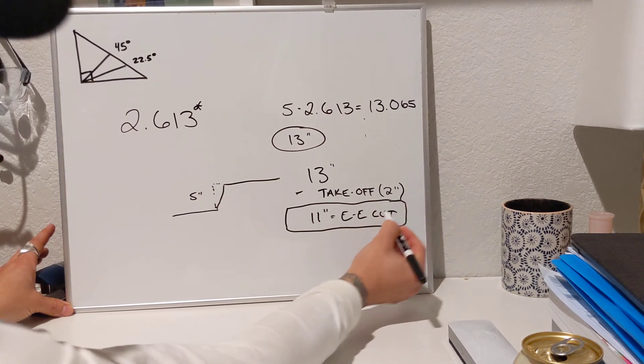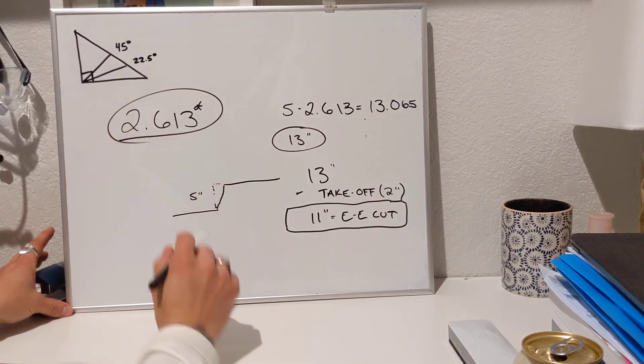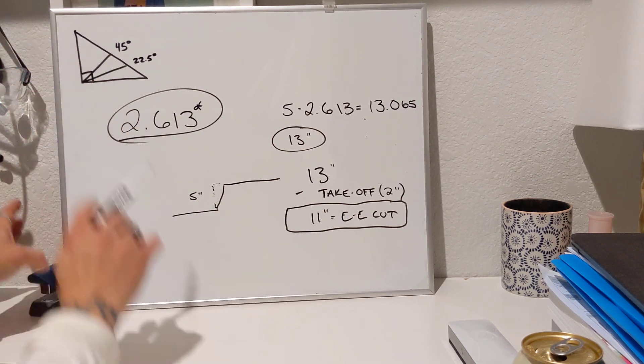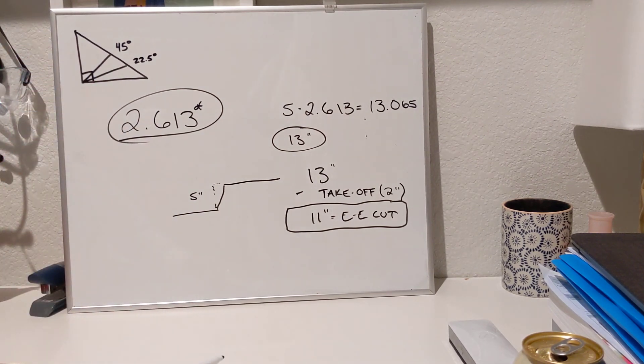That's how you do a 22 and a half degree offset. And if you really look at that we'll go into this but that'll make more sense in the next video. Enjoy.